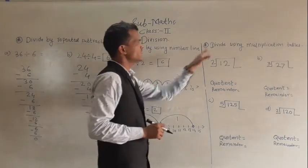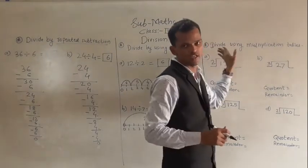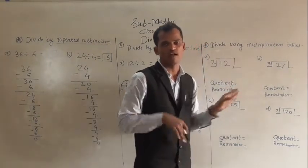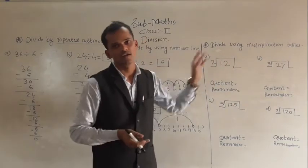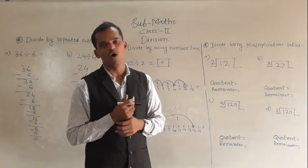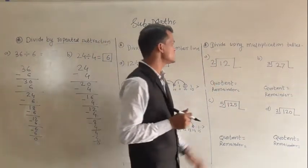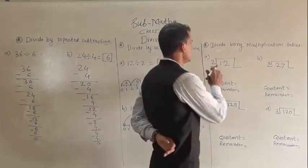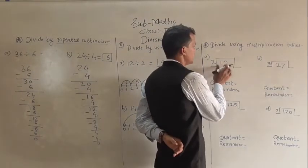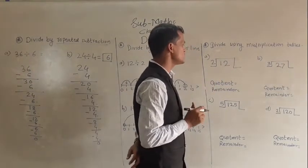You can verify the answer: 7 twos are 14, so our answer is correct. Next: divide using multiplication tables. Another name for this method is the long division method. See the example: 12 divided by 2.